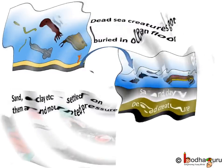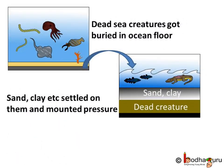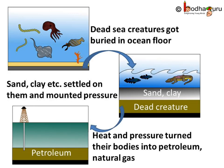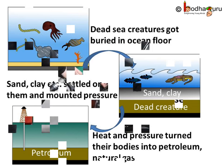Petroleum was formed from the remains of sea creatures. As they died, their bodies settled at the bottom of sea or ocean and gradually got covered by sand, clay, etc. Over millions of years, absence of air, high temperature and high pressure transformed the dead organisms into petroleum and natural gas.